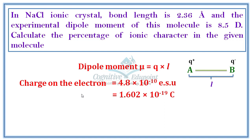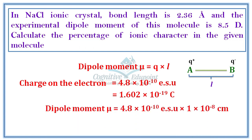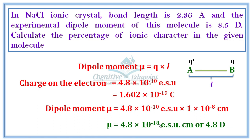One unit of dipole moment: Q is the charge and distance is the bond distance. If one unit of charge is separated by one angstrom, the dipole moment equals 4.8 × 10⁻¹⁰ ESU multiplied by 1 × 10⁻⁸ cm (one angstrom in CGS). This gives 4.8 × 10⁻¹⁸ ESU·cm, which equals 4.8 Debye.